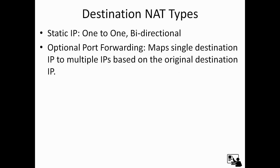There are two types of destination NAT: static and optional port forwarding. Static is one-to-one and includes a bidirectional option, which will be available during configuration. Optional port forwarding maps a single destination IP to multiple IPs based on the original destination IP.